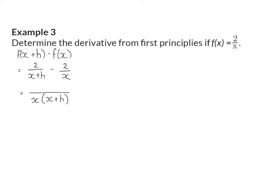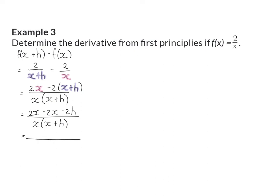We have to adapt our numerators according to this new denominator. The first fraction's 2 should still be multiplied by x in the numerator, and the second fraction's 2 in the numerator should still be multiplied by x plus h. Now I can multiply the minus 2 into the bracket and once I've added up my like terms, I'll be left with minus 2h divided by x times x plus h. This represents the numerator of our formula. Because I now have a fraction in my numerator, I'm going to prefer to first simplify further before substituting into the formula, so I'm going to take this numerator and divide it by h.